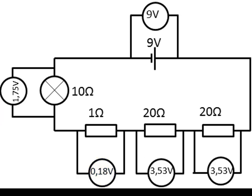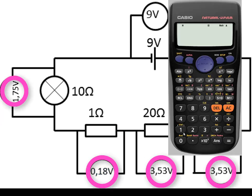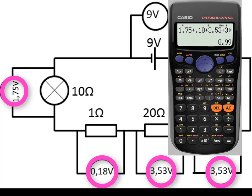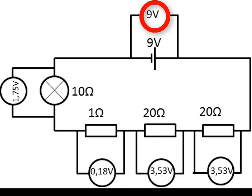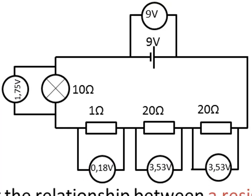Interestingly, if you add the voltages up — 1.75 plus 0.18 plus 3.53 plus 3.53 — you get 8.99. With rounding off, that equals 9 volts. In other words, what the resistors are taking out of the circuit overall equals 9 volts, which is the same as what the battery put in.